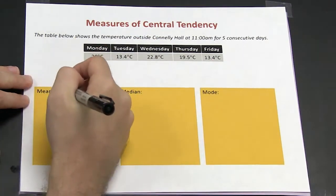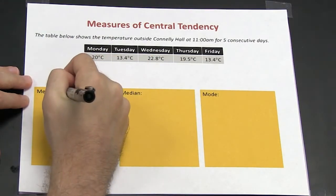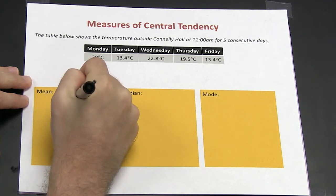Recall that mean is the same thing as average, which is the sum of the data divided by the number of data points.